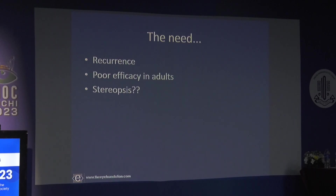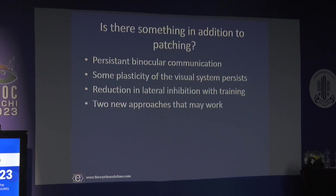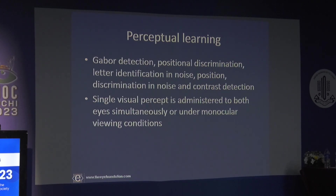Dichoptics was said to allow persistent binocular communication and some plasticity extending into adulthood. Adults who lose their good eye due to unfortunate reasons have shown sustained improvement in the amblyopic eye and some reduction in lateral inhibition. Two new approaches include perceptual learning — repeating a challenging task — using commercially available Gabor patch detection, positional discrimination, letter identification, and noise tasks. In dichoptics, the stimulus is split into two halves for integration; in perceptual learning, the same stimulus is administered to both eyes simultaneously or under monocular viewing.